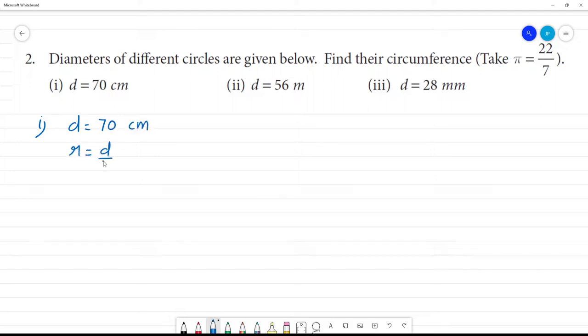Radius is equal to diameter by 2, which is 70 by 2. Radius is equal to 35 cm. Circumference calculated: 2πr. That is equal to 2 into 22 by 7. Pi is equal to 22 by 7.